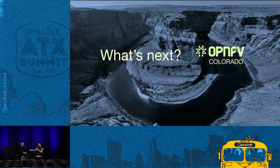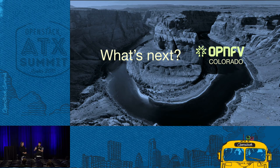All the issues we found in Brahmaputra when doing these complex integrations — we have to start automating how to get around those. Automation of the solutions is critical. If we want to continue to grow, bring in new features, and verify they work release over release, year over year, it requires iteration and automation. And we need to be closer to upstream.